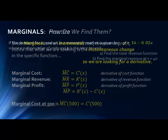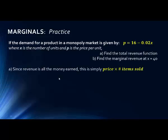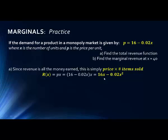Let's look at an example. If the demand for a product in a monopoly market is given by P = 16 − 0.02X, where X is the number of units and P is the price per unit, find the total revenue function. Since revenue is price times quantity, we have R = P·X. Substituting, we get R(X) = 16X − 0.02X².